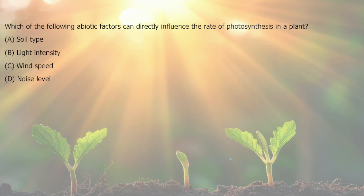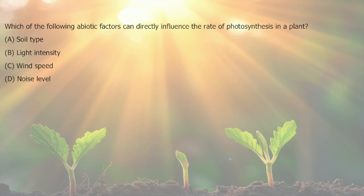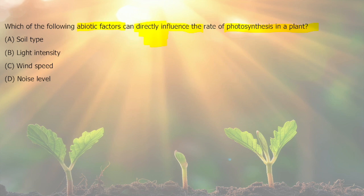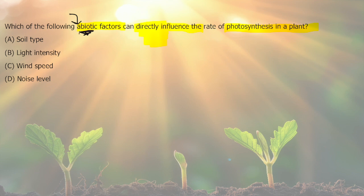Our second question reads: which of the following abiotic factors can directly influence the rate of photosynthesis in a plant? We need to know what abiotic factors are, and the word directly is a key part of this question. Bio means life, and a means not, so abiotic factors are the non-living components of an ecosystem. They influence the living organisms in the ecosystem, but they themselves are not living.